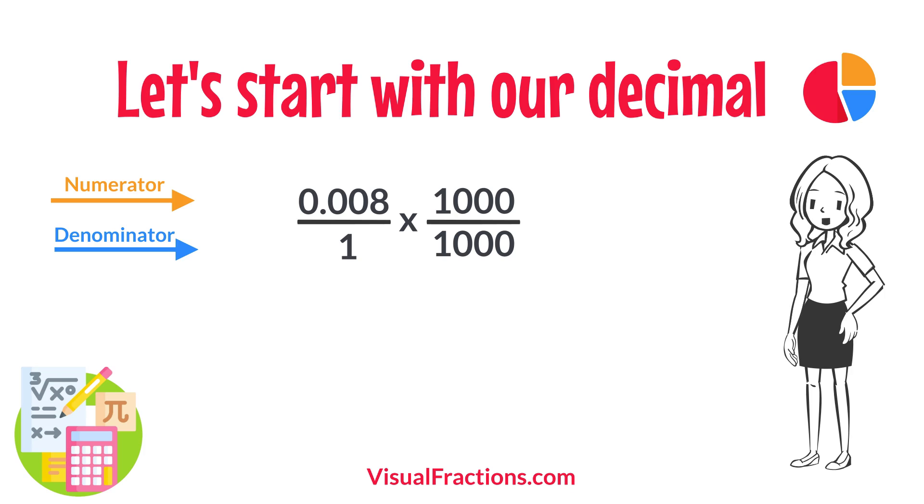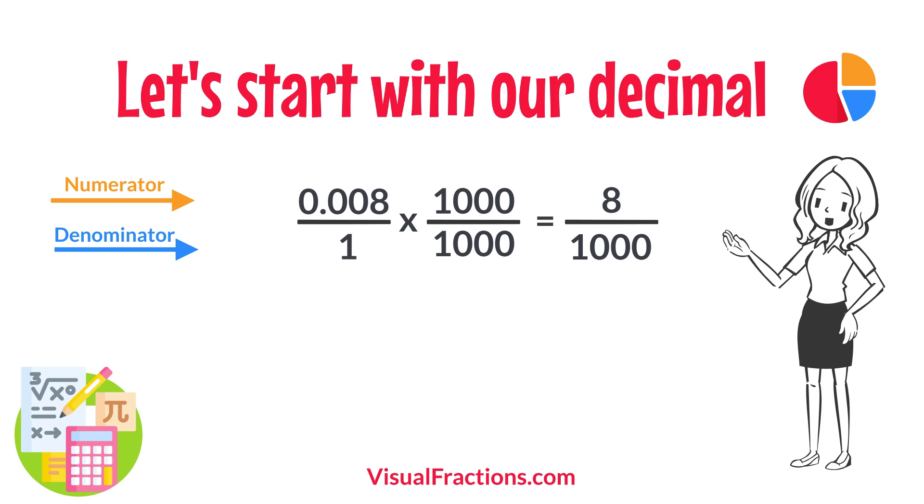So, 0.008 times 1,000 gives us 8, and 1 times 1,000 gives us 1,000. This translates 0.008 to the fraction 8 over 1,000.